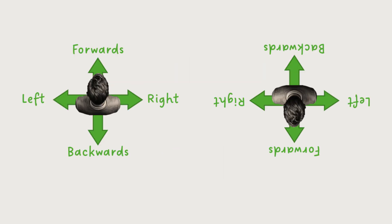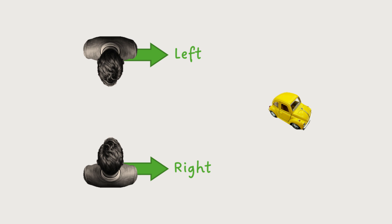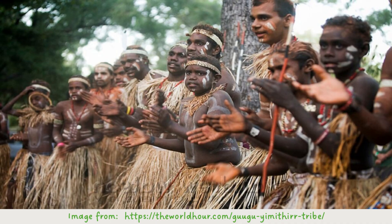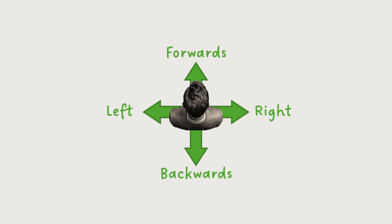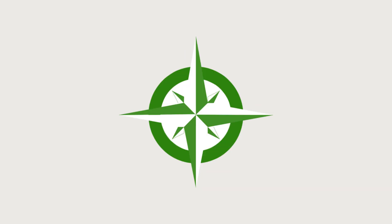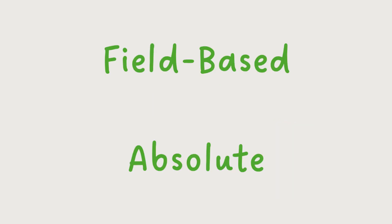That is, it's based on and moves with the body. So individuals facing in opposite directions refer to the same object's location using different words, whether that be left or right. But such a system isn't universal. The Gugu Yimite people, who live in Hopevale in northeastern Australia, don't have words for left and right, but rather use a system of cardinal directions — north, south, east and west — for all such purposes. This is what we call a field-based or absolute system.